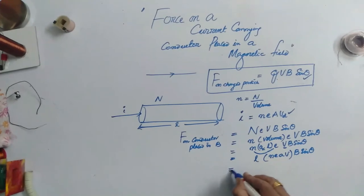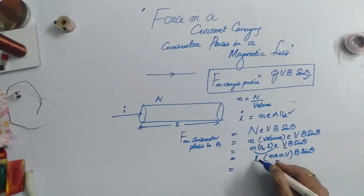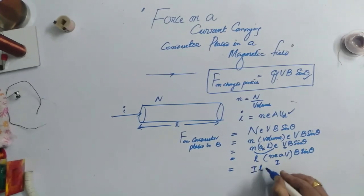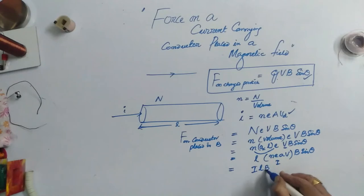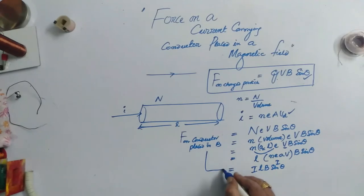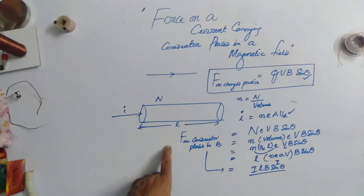So now this can be written as I, so I, L, B, sin theta or B, I, L, sin theta. This is the expression for force experienced by the conductor when it is placed in magnetic field.